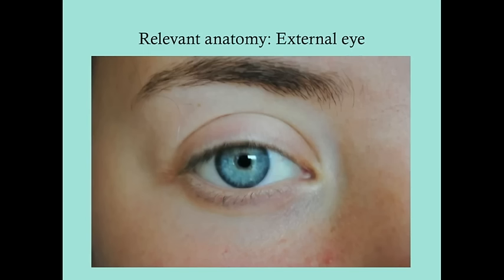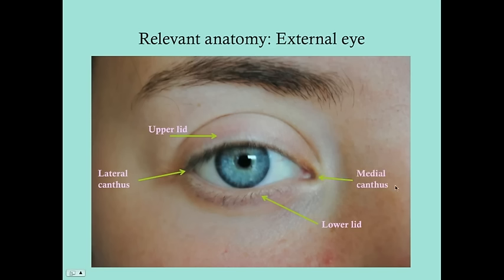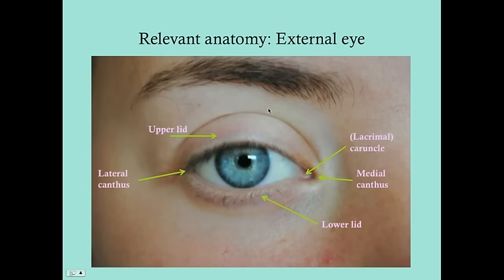So the external eye here: the upper lid, lower lid, the lateral canthus — this is the right eye. This is the nasal bridge. And then the medial canthus. The lateral and medial canthi are just the ends of where the eyelids come together. This little pink spot here is called the caruncle, the lacrimal caruncle, and that's where the tears come out. Inside is the lacrimal duct, which ultimately empties into the nose, and the lacrimal gland, which is on the superior and medial aspect of the orbit.